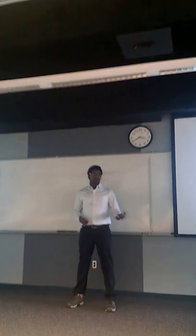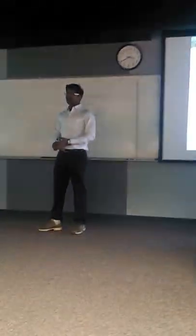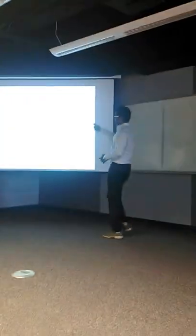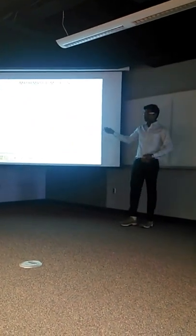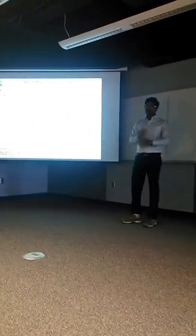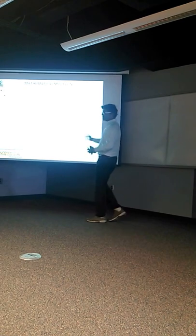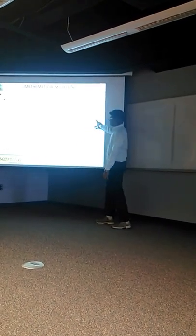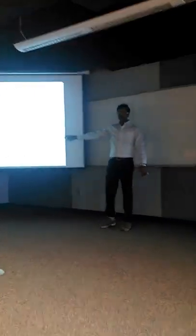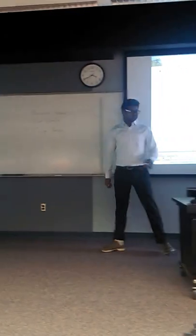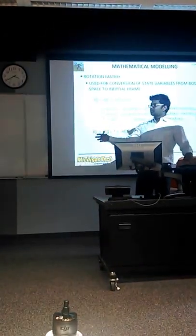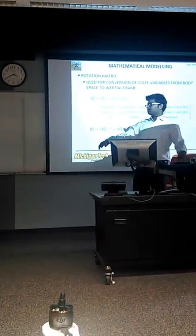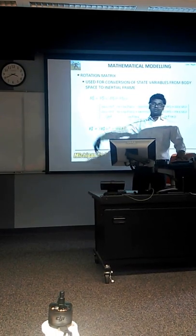We need to convert state variables from the body frame to the inertial frame. The tool for this is the rotation matrix. This matrix is useful for converting from body frame to inertial frame. For example, to convert velocity to inertial frame velocity, we multiply this matrix by UVW, which are the body frame velocities. The same applies to every state variable. We can also convert from body frame to inertial frame using the inverse of the rotation matrix.